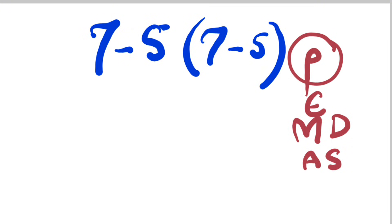So first of all, we have to handle parenthesis which is 7 minus 5, and 7 minus 5 will be as it is multiplied by 7. So 7 minus 5 will be equal to 2.